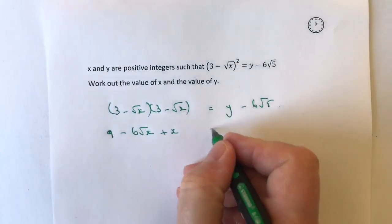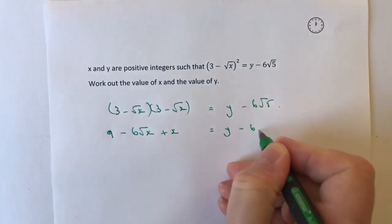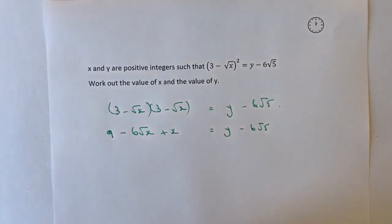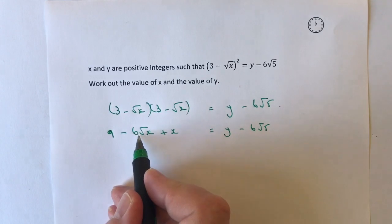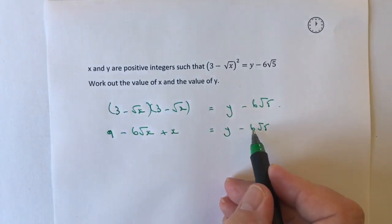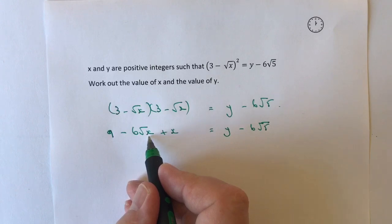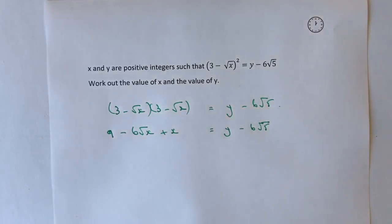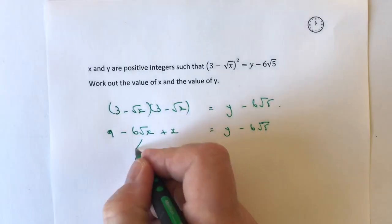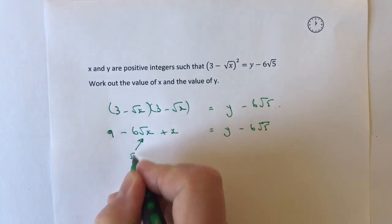So we're saying that equals that. Well the good news is that this -6√5 is this. So basically what we're saying here is the value of x is actually 5. So we can say that must be 5.